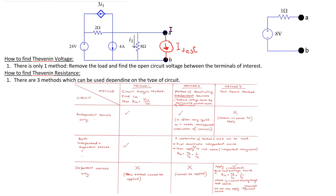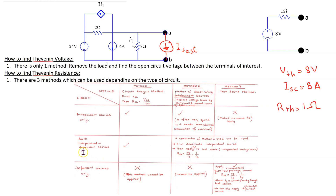Using LTSPICE we have shown that V Thevenin is 8 volts and I short circuit is 8 amps. Therefore R Thevenin is 1 ohm as expected. This shows how we can find the Thevenin parameters for circuits containing both independent and dependent sources using LTSPICE.